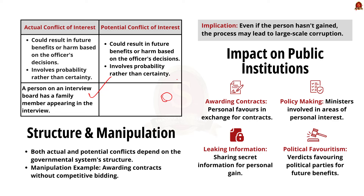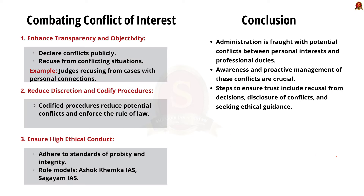Public institutions are seriously affected by conflict of interest in various ways: awarding contracts to known persons in exchange for personal favors; ministers getting involved in policy making in areas of substantial personal interest, such as a minister buying land where a project from their department may be set up; leaking secret information for personal advantage; or giving verdicts in favor of a political party in view of future political appointments as post-retirement benefits.